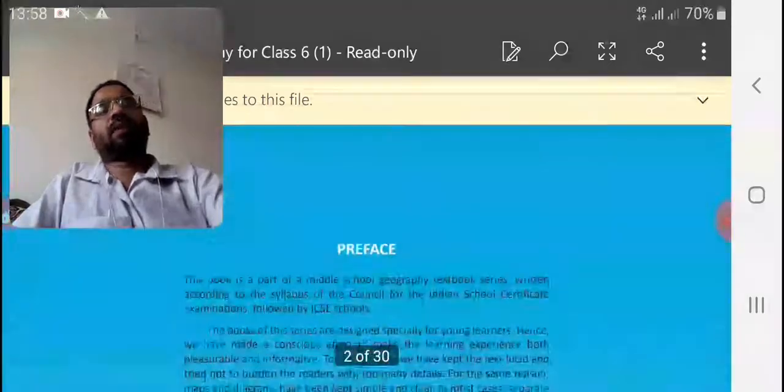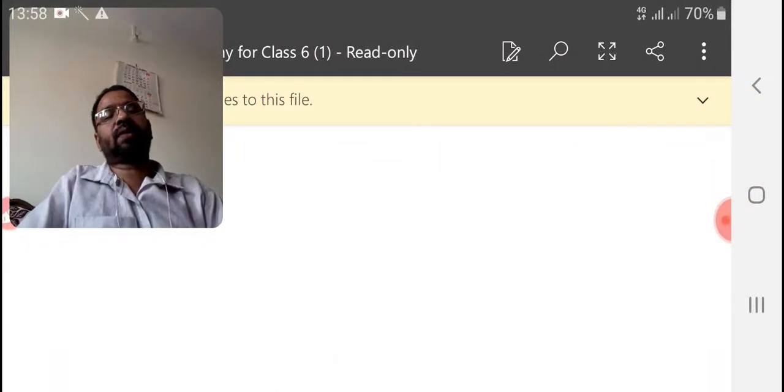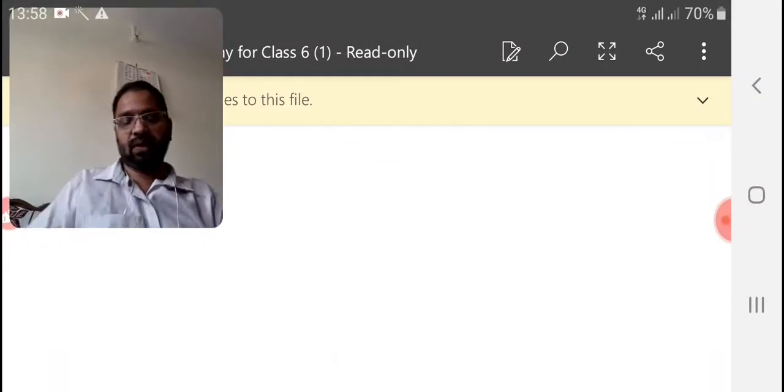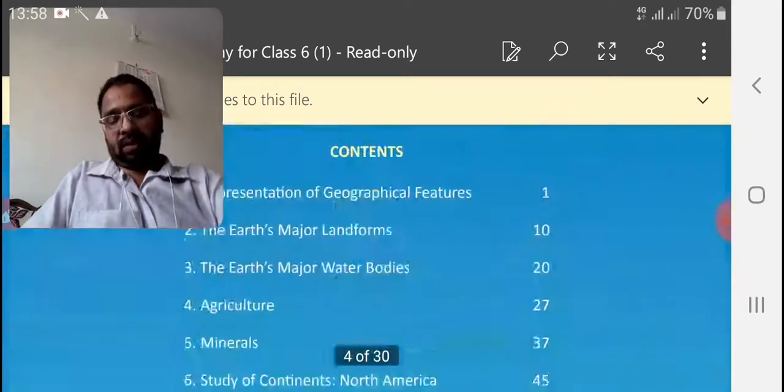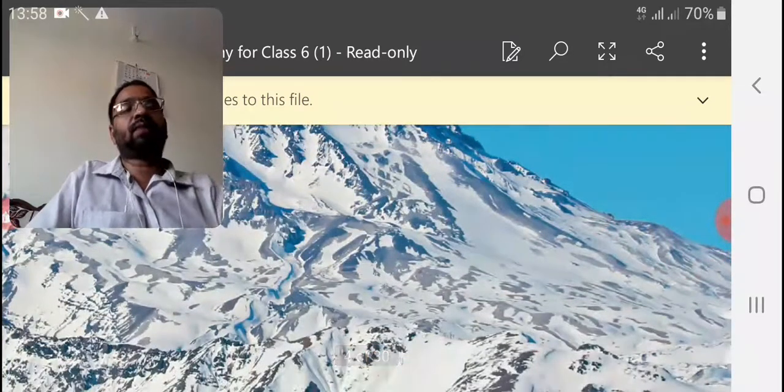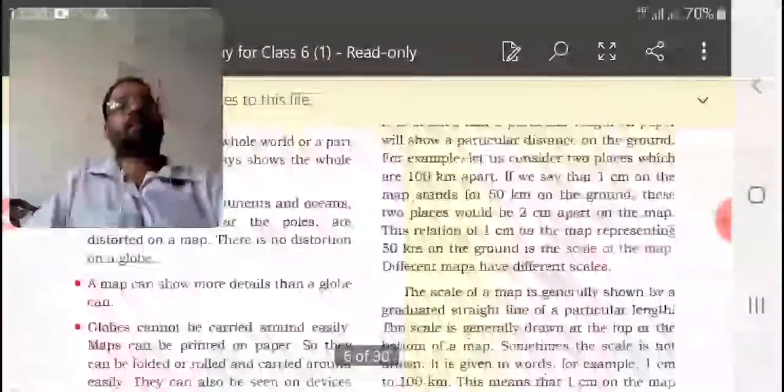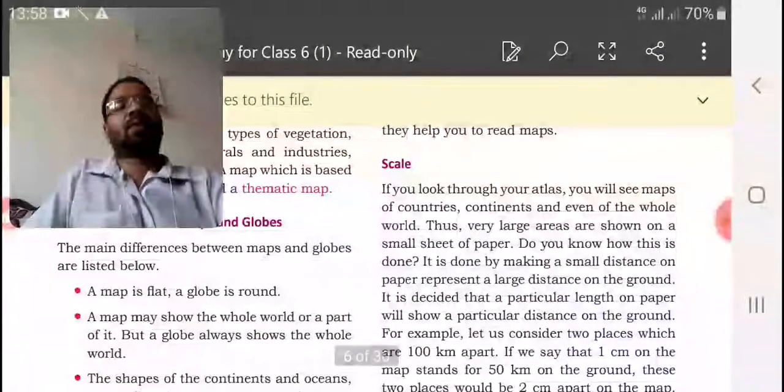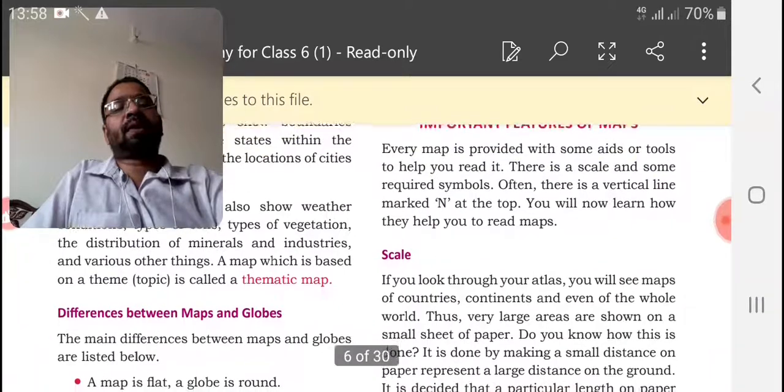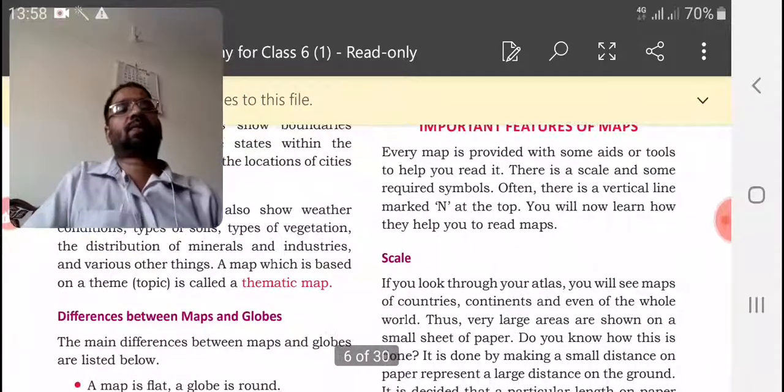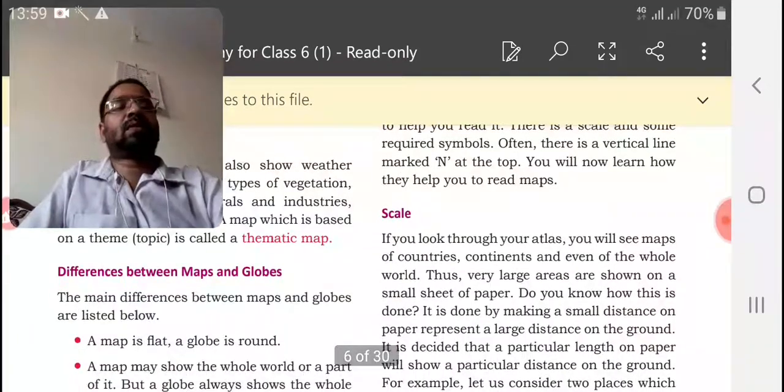From last session onwards we started our revision. Last session we were discussing the first lesson. We were doing the revision of the first lesson, representation of geographical features. We discussed what is maps, what is globe, what is the scale, difference between maps and the globes. Then important features on the maps we started to discuss last time.